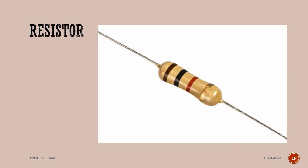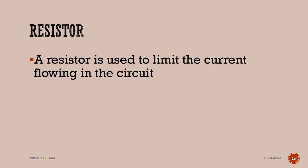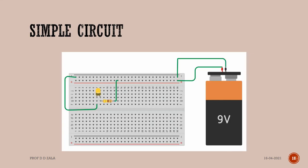Next, we will learn about the resistor. A resistor is used to limit the current flowing through the circuit. Let us build a simple circuit using an LED, a resistor, and a breadboard. The image shows the proper connection.